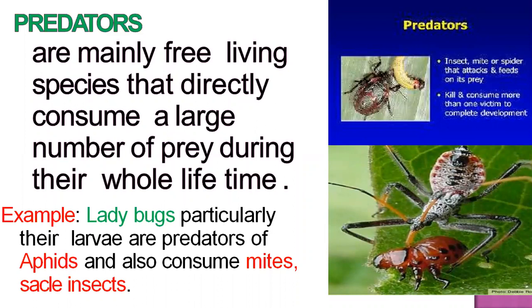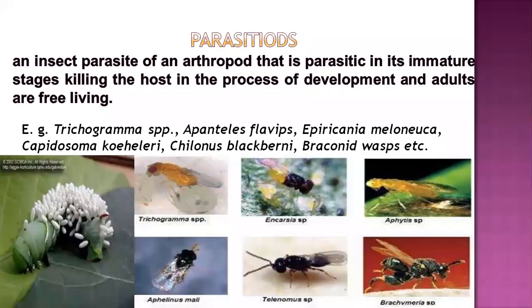First, let us discuss what is meant by a predator. A predator is an organism or free-living species that directly consumes a large number of prey during its whole lifespan or for the completion of its life cycle. For example, ladybugs — particularly their larvae — are predators that feed on aphids and also consume many small insects like mites, scale insects, and leafhoppers. Other examples of predators include the praying mantis, dragonfly, and damsel bug.